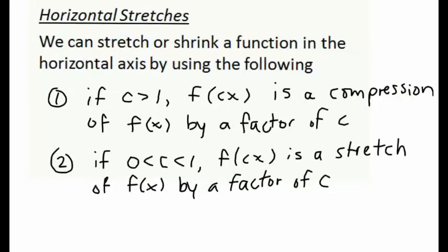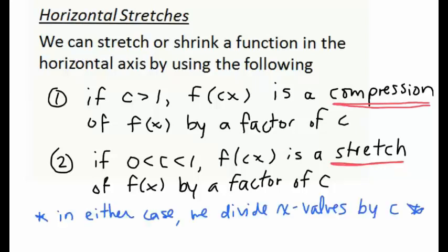For horizontal stretches, we have the following: if our constant is greater than 1, then f(cx) is a compression of our original function f(x) by a factor of c. Notice that since everything is happening on the inside of our function, it occurs in an opposite way to what our intuition tells us — a number bigger than 1 actually compresses our original function. Also, if our constant is between 0 and 1, then f(cx) is a stretch of our original function by a factor of c. In either case, to obtain our new function f(cx), we divide all x-values from our original function by c.